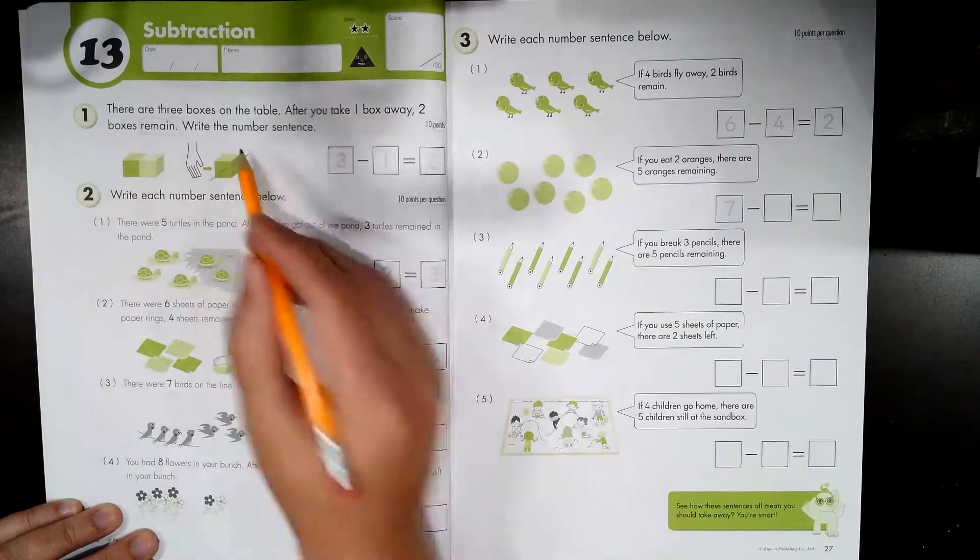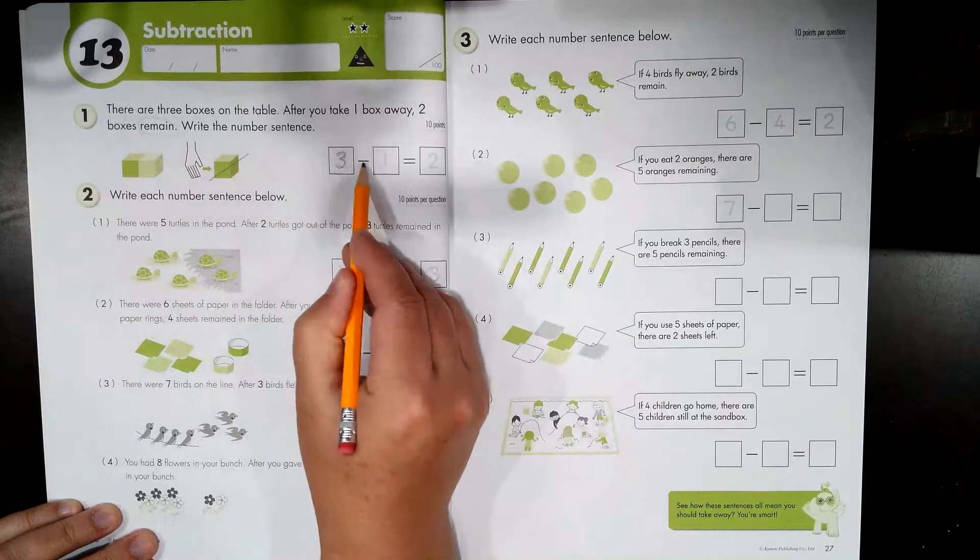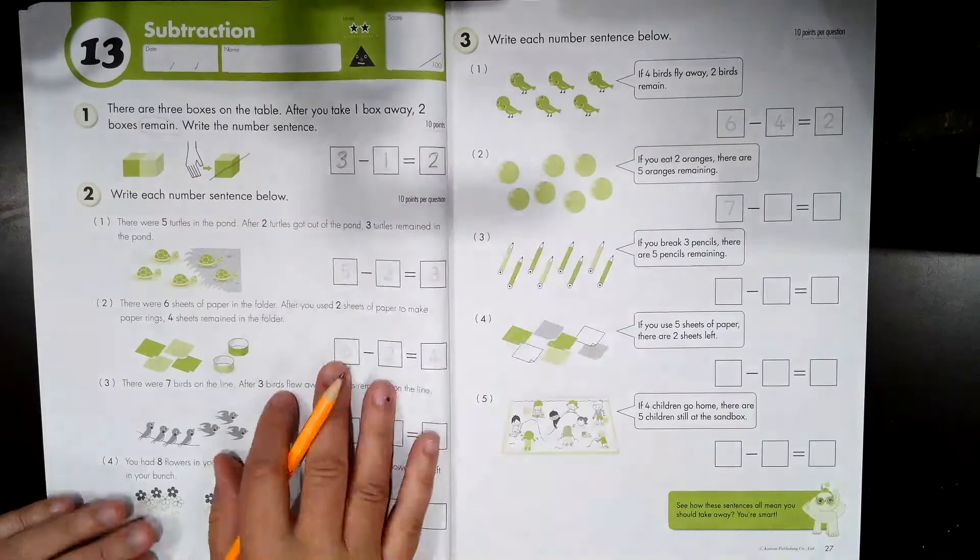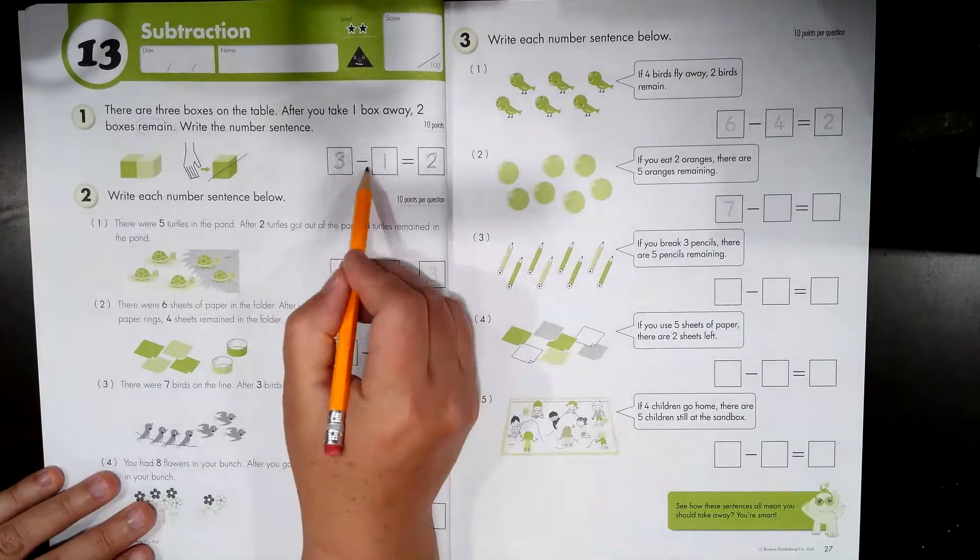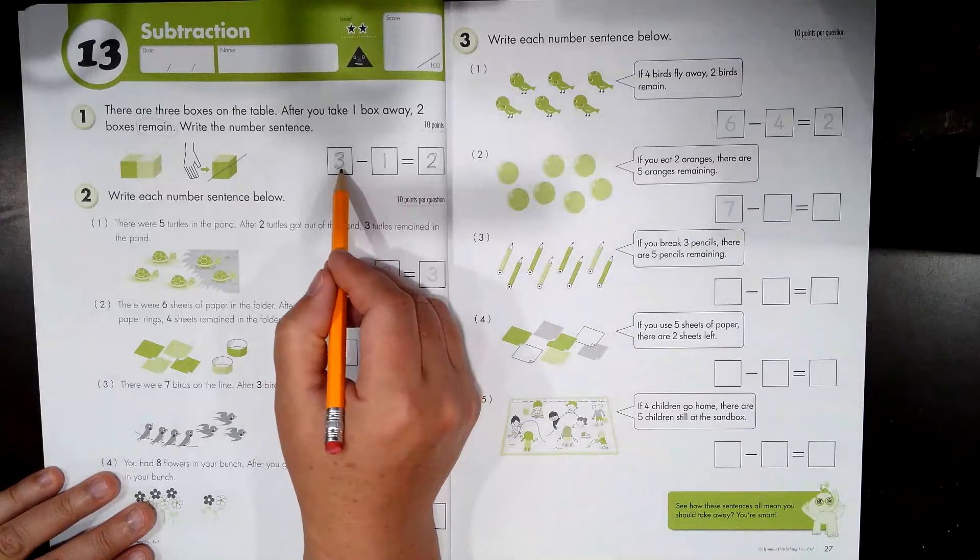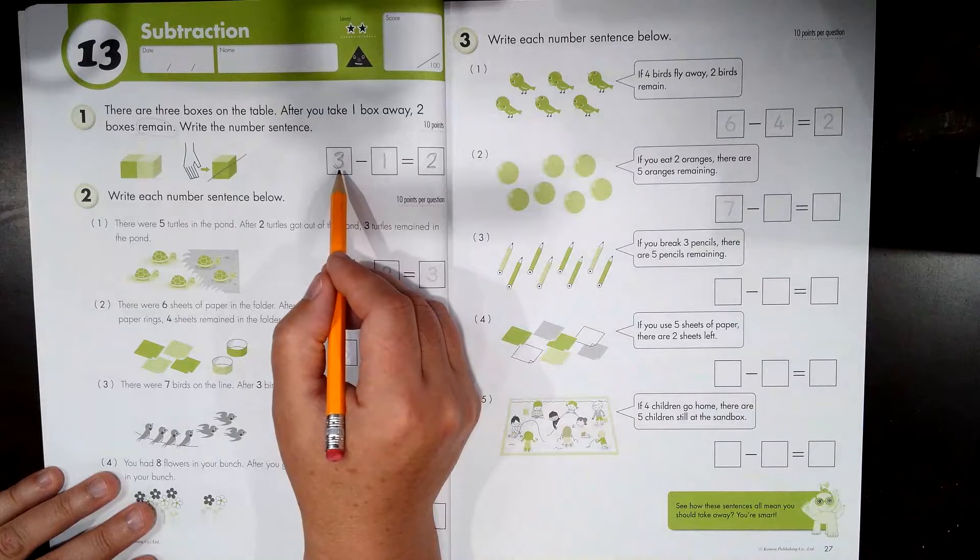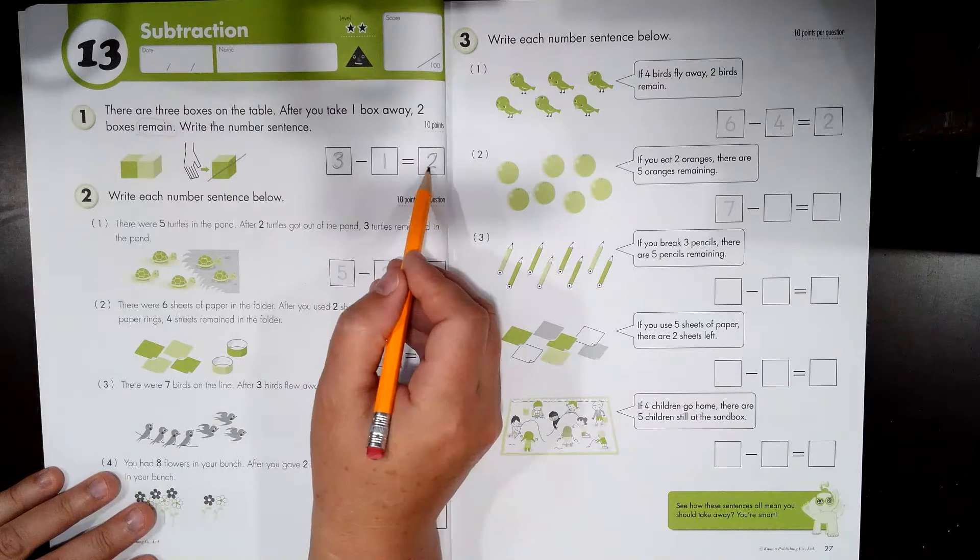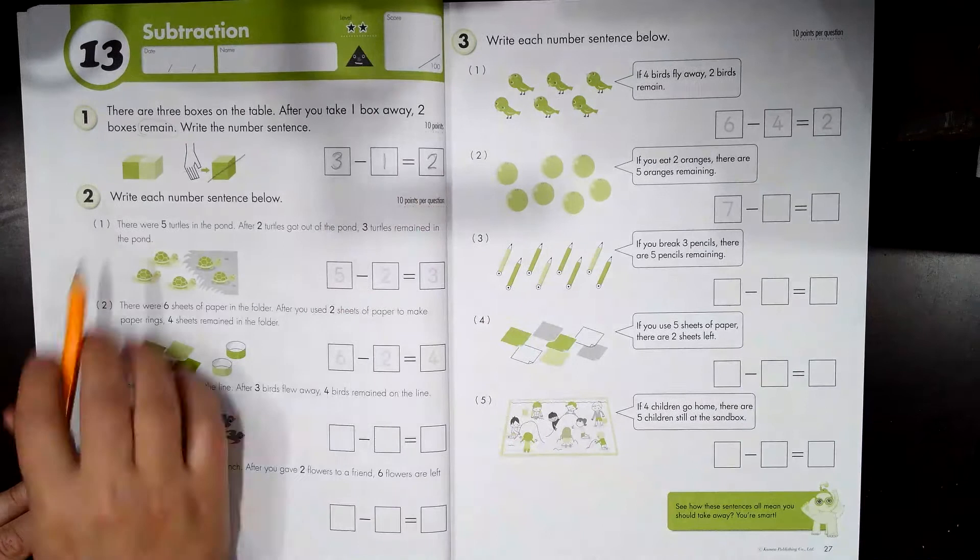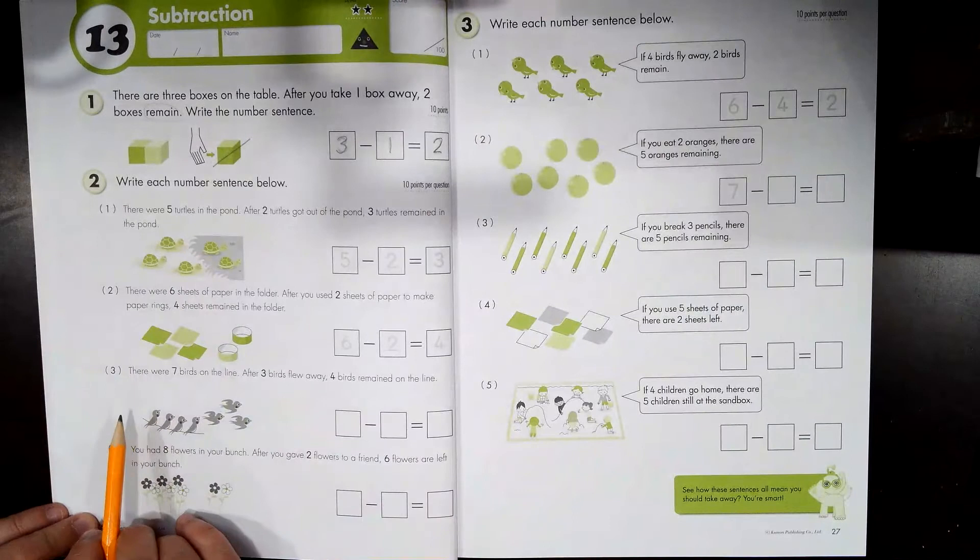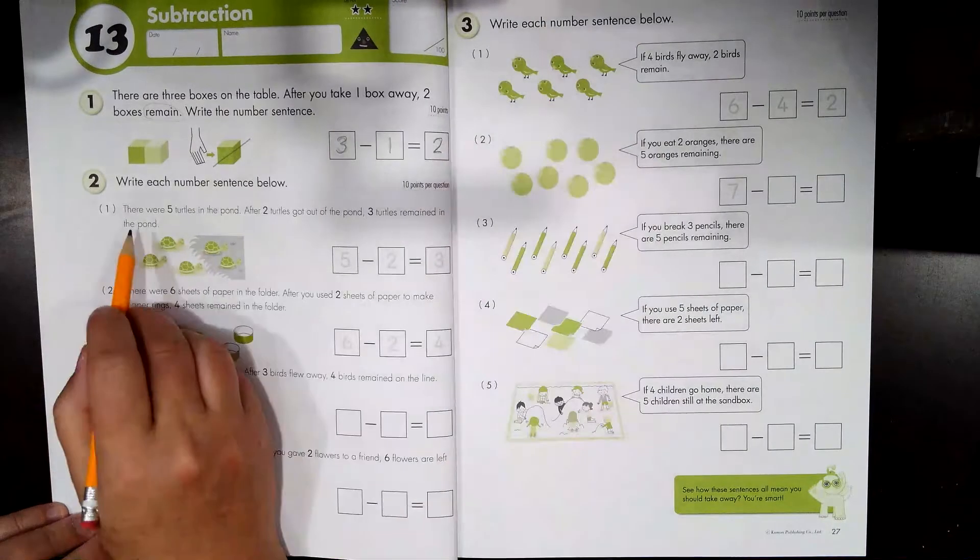We're doing our number sentence using the minus symbol and the equal symbol. In subtraction, the big number starts here at the first box. So your largest number, the one with the most, starts here. You take some away and you have some left over. Some remain. So let's write those number sentences. I'm gonna do the first couple with you and then I'm going to let you try to do the rest on your own.